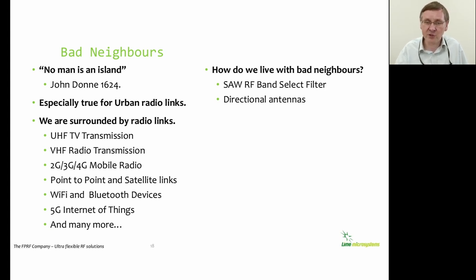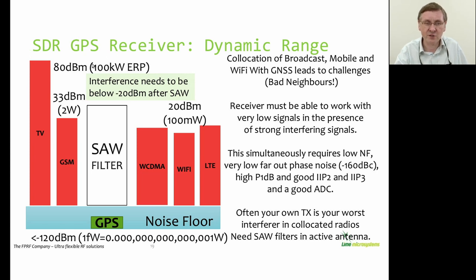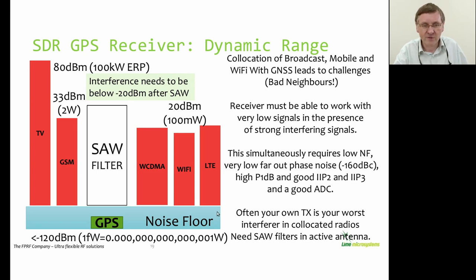The answer to living with bad neighbours is through the use of RF SAW filtering to select what bands we're listening to, and through the use of directional antennas where possible. The biggest bad neighbour is the local TV transmitter — in a big city such as London, a 100 kilowatt transmitter in Crystal Palace corresponds to plus 80 dBm of output power. Whereas a GPS signal comes in at about minus 120 dBm, or one femtowatt. Wi-Fi and cell phones are more intermediate, in the 100 mW to 2 W range.